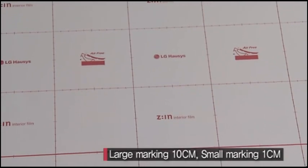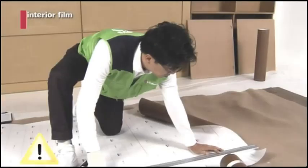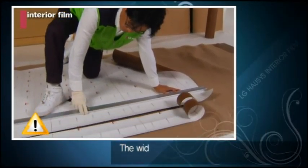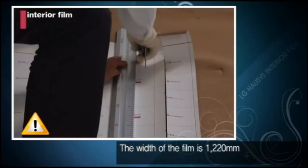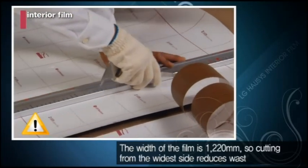The large marking on the back of the film signifies ten centimeter increments and the small marking one centimeter. The width of the film is 1220 millimeters, so cutting from the widest side reduces wasting of film.